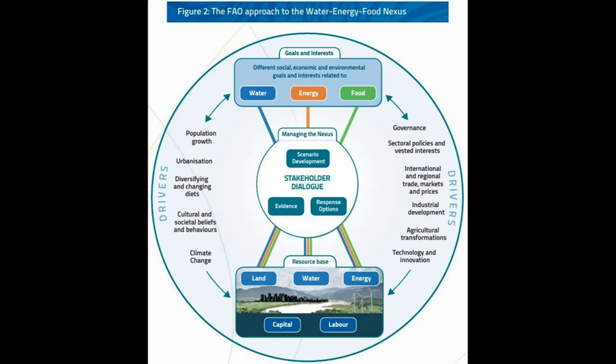An example of a non-renewable energy source is coal. According to 2012 data, about 16% of global final energy consumption comes from renewable resources, with 10% of all energy from traditional biomass mainly used for heating, and 3.4% from hydroelectricity. New renewables — small hydro, modern biomass, wind, solar, geothermal, and biofuels — account for another 3% and are growing rapidly. At the national level, at least 30 nations around the world already have renewable energy contributing more than 20% of energy supply. National renewable energy markets are projected to continue to grow strongly in the future.